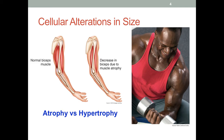One way that cells react to stimuli or injury is that they increase their size. Resistance training to build up muscle mass is a great example of this. We know for muscle that we must use it or lose it. So if we are doing resistance training, the muscle or muscle groups we focus on will become bigger. This is because in this situation the muscles are undergoing a process called hypertrophy, or an increase in size.